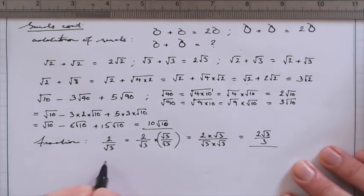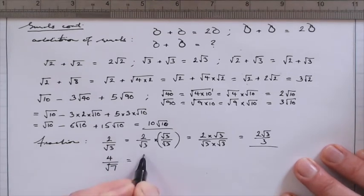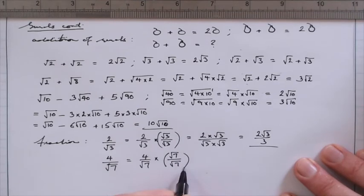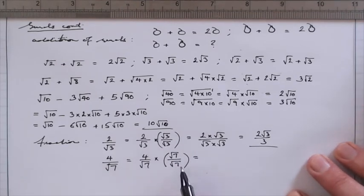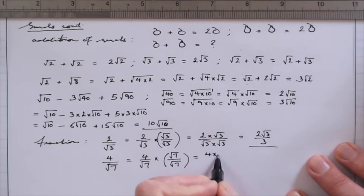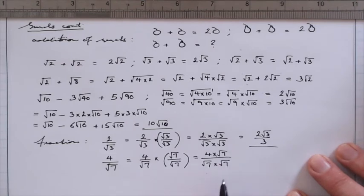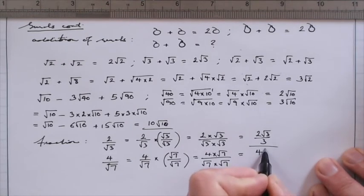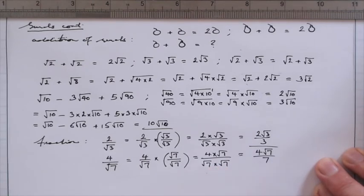Let's just do one more example. Imagine we have 4 over the square root of 7. So again, we just multiply this by 1, but we choose 1 to be that surd in the denominator divided by itself. Then we have a simple fraction multiplication. We have 4 lots of root 7 on top. We have root 7 times root 7 on the bottom. And this therefore becomes 4 root 7 divided by 7.